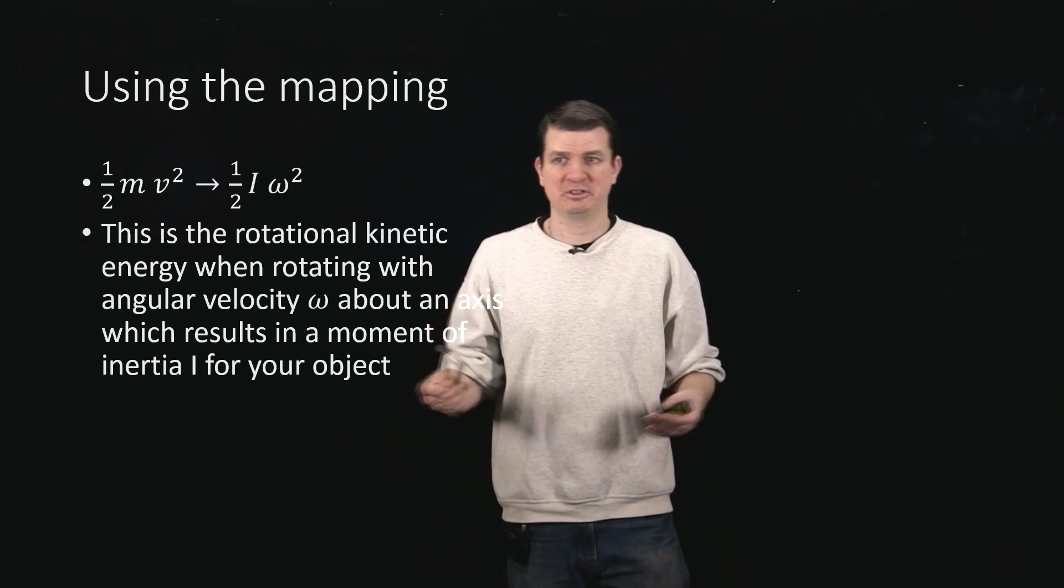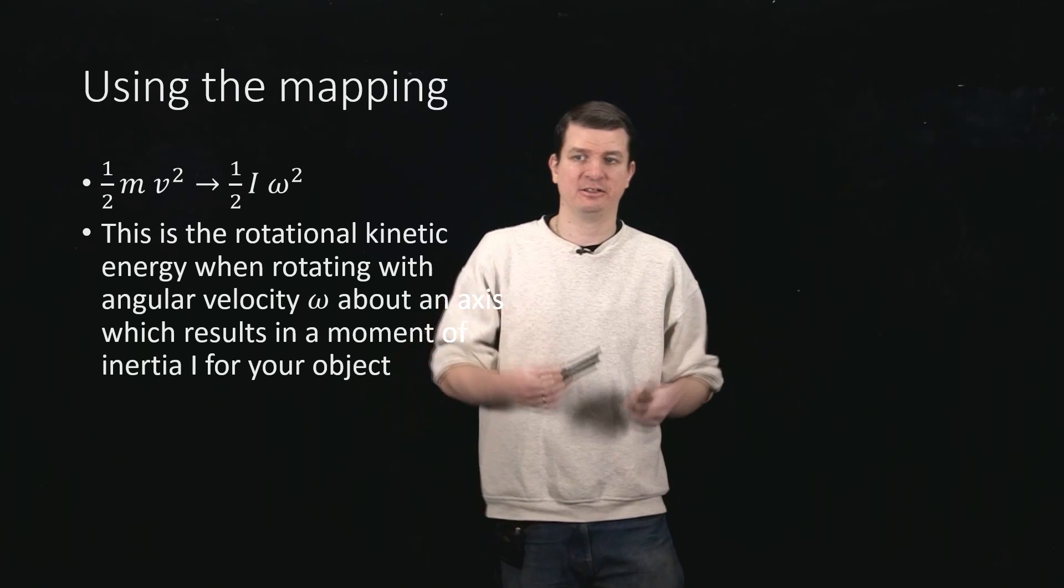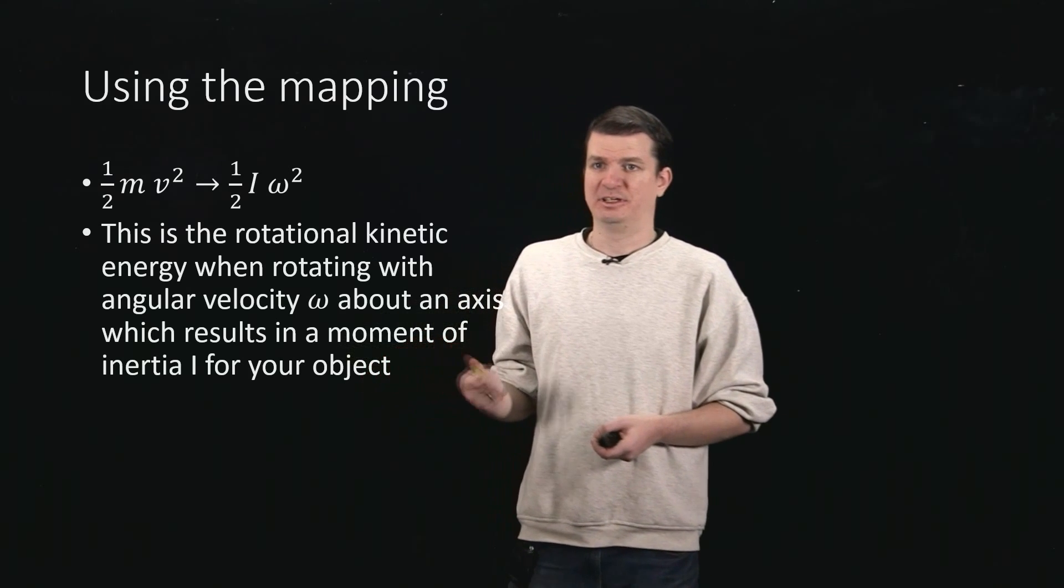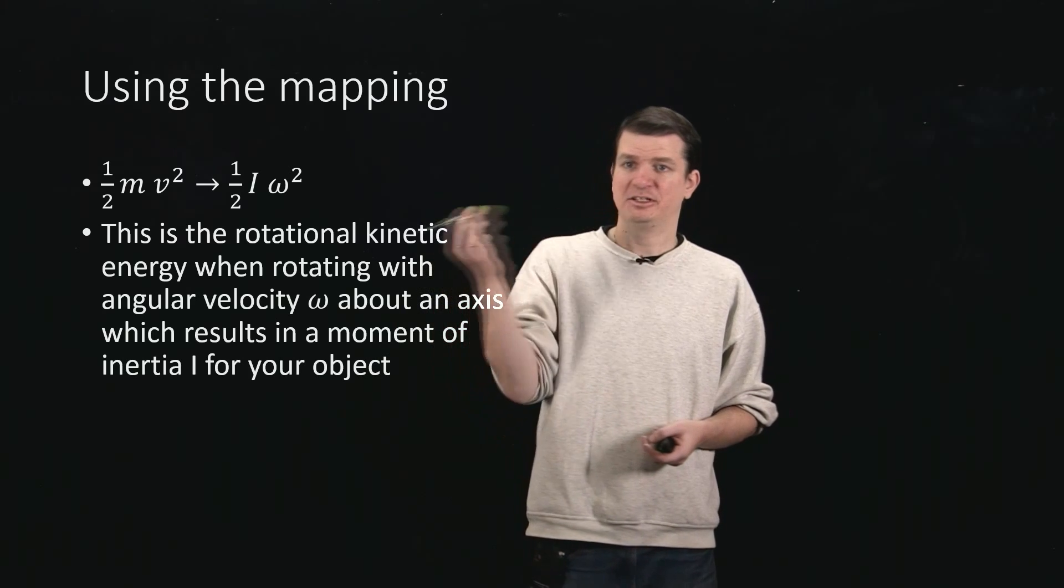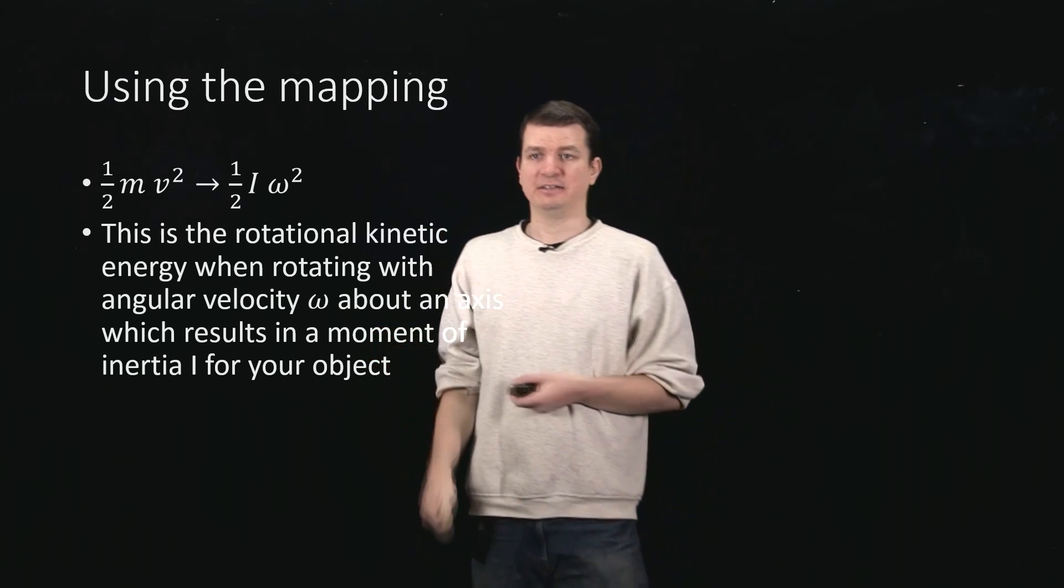So that's the simple mapping. M turns into moment of inertia. V turns into angular velocity. And so you end up with v squared becoming omega squared, and you get that equation. And that's the right answer.